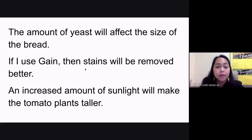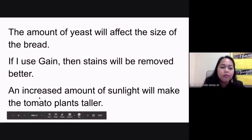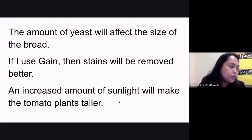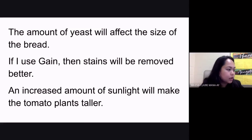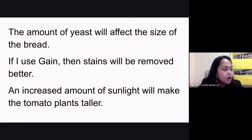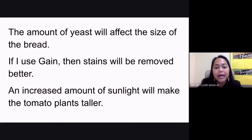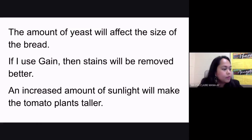For the last example: an increased amount of sunlight will make tomato plants taller. Your independent variable is the amount of sunlight — the variable you will manipulate and change in your experiment. Your dependent variable is the plant's height, meaning how your tomato plants will grow. What other factors can be your constants? Examples include the nutrients in the soil, the same amount and type of soil.